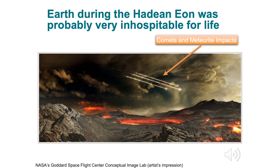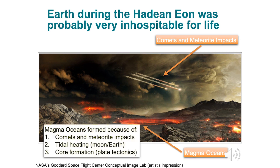This is still a highly debated topic because we don't have a really good rock record. However, we do know that early Earth was probably an extremely hot environment. There were also magma oceans — so instead of water, the early Earth oceans were made of magma. These magma oceans started because of several reasons. One of which is comet and meteorite impacts, which heated up the surface of the Earth. Another is tidal heating, which has influences from how close the Moon is to the Earth.